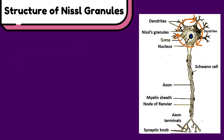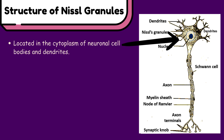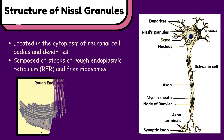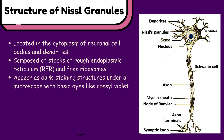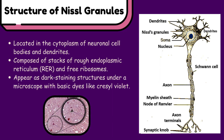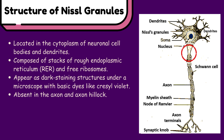Structure of Nissl Granules. Structurally, Nissl granules are found in the cytoplasm of neuronal cell bodies and dendrites. They consist of stacks of rough endoplasmic reticulum and ribosomes. Under a microscope, they appear as dark staining granules due to their RNA-rich composition. Importantly, they are absent in the axon and axon hillock, making them a distinguishing feature of neuron anatomy.